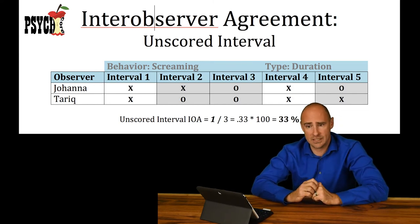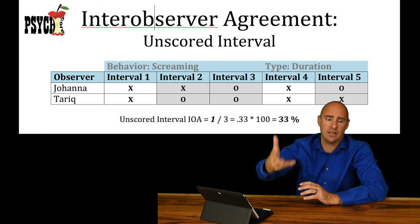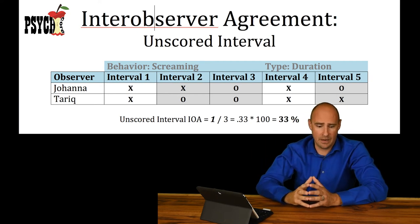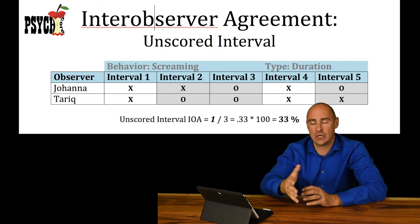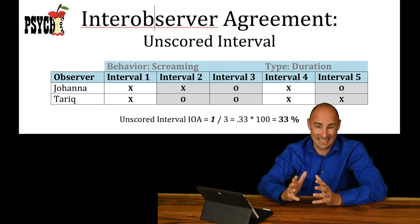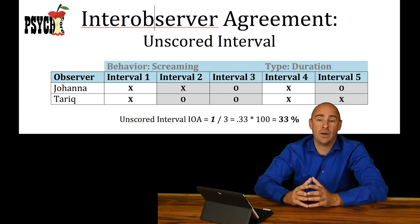So it grossly underestimates behavior. You take the total number of times when they agreed that the behavior did not occur, divide that by the total number of intervals that contained a non-occurrence from either one, multiply that by 100, and you end up with the inter-observer agreement.